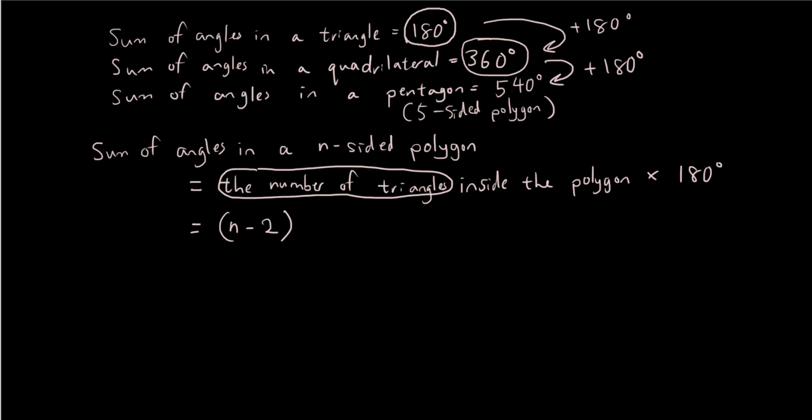Why is the number of triangles inside the polygon n minus 2? Well, if you think about it, a quadrilateral is a four-sided shape. Four minus 2 is 2. So there are two triangles inside the quadrilateral. In the pentagon, it's five-sided. 5 minus 2 is 3. So in the pentagon, there are three triangles.